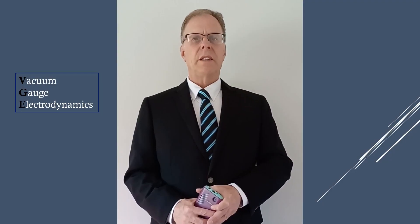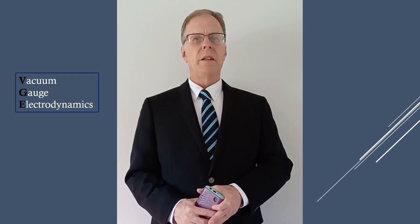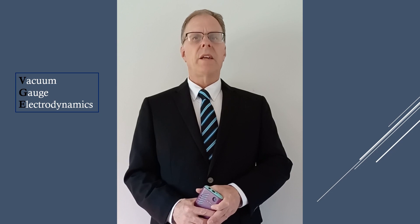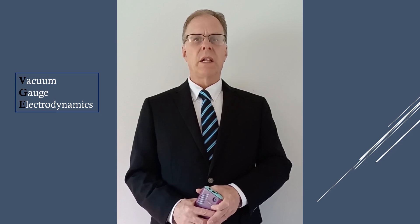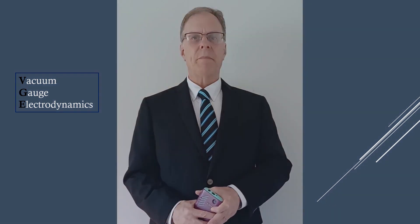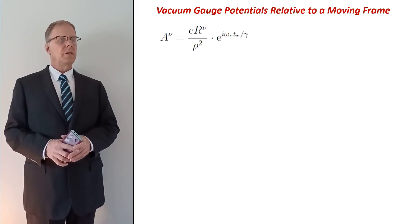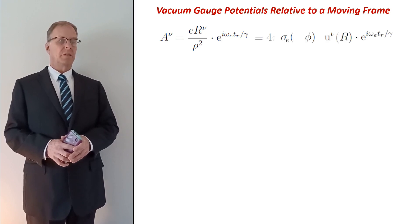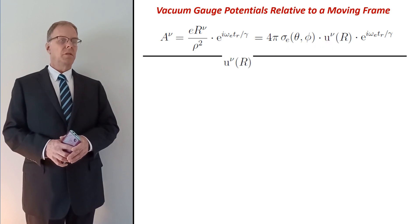We'll calculate the velocity fields of the electron in a few minutes. For now, let's see what vacuum gauge potentials look like relative to a moving frame. This equation shows the set of vacuum gauge retarded potentials relative to a moving frame undergoing oscillations with respect to the retarded time. The particle can be rationalized by analyzing the potentials in terms of individual components.